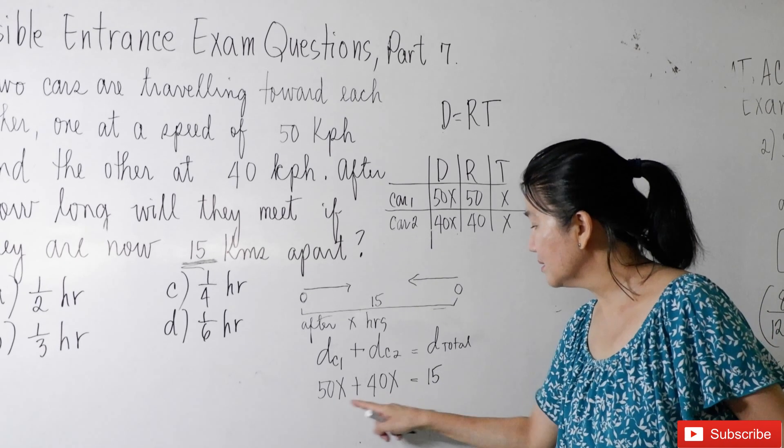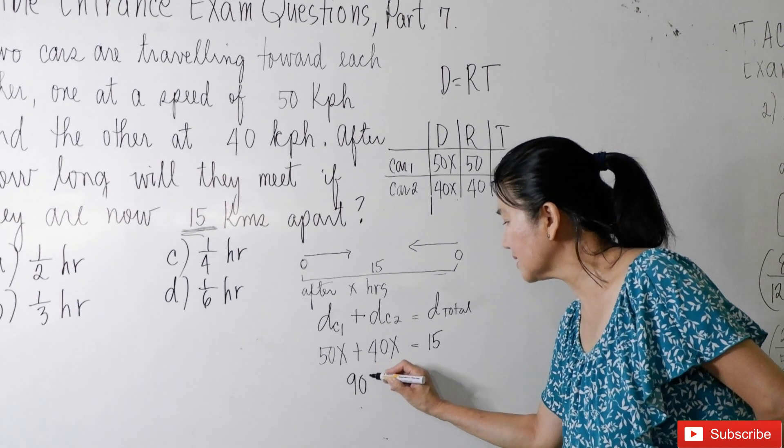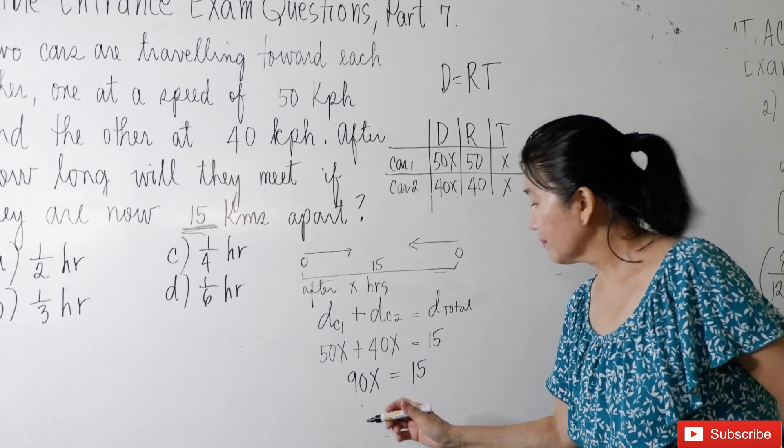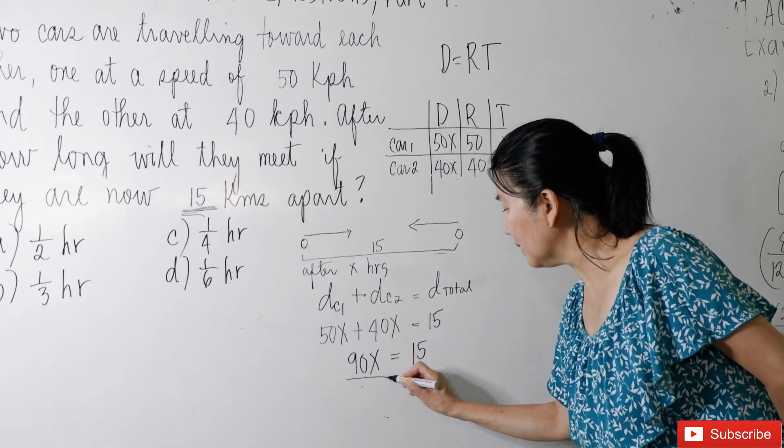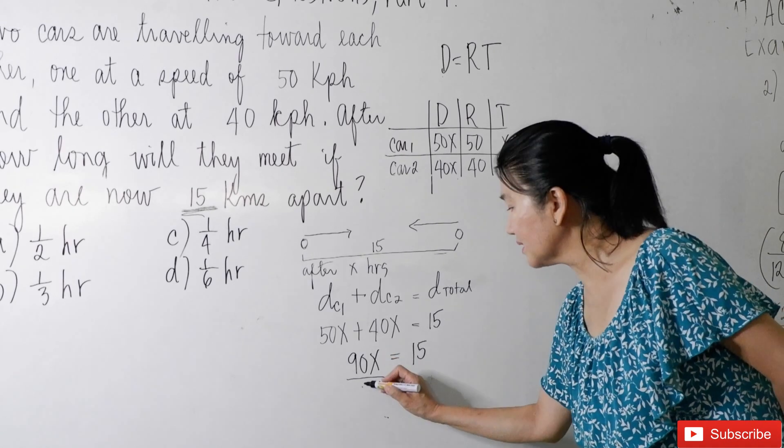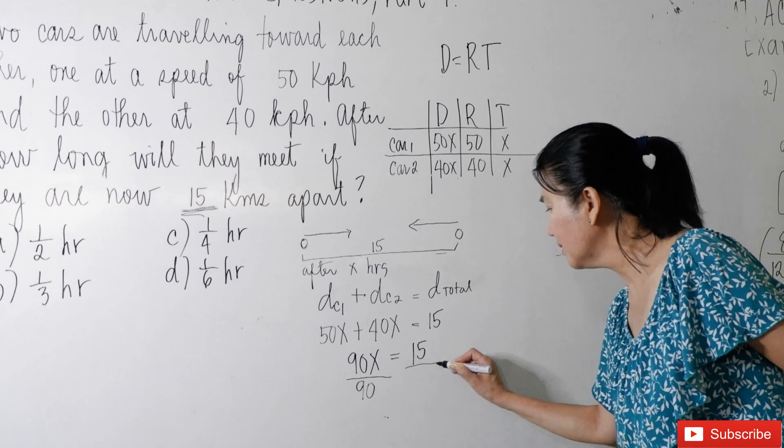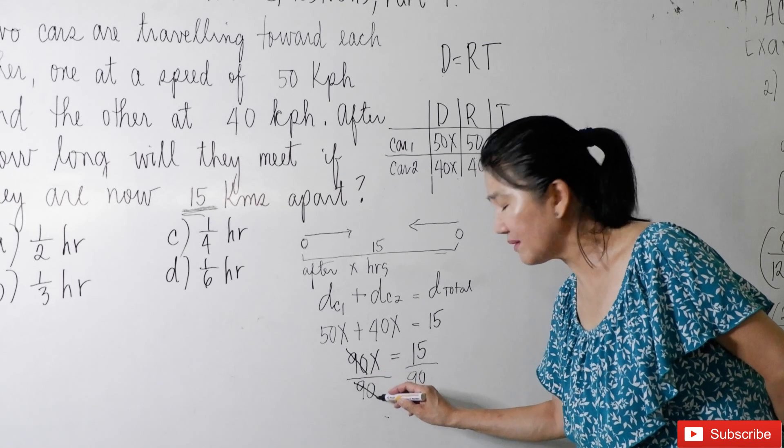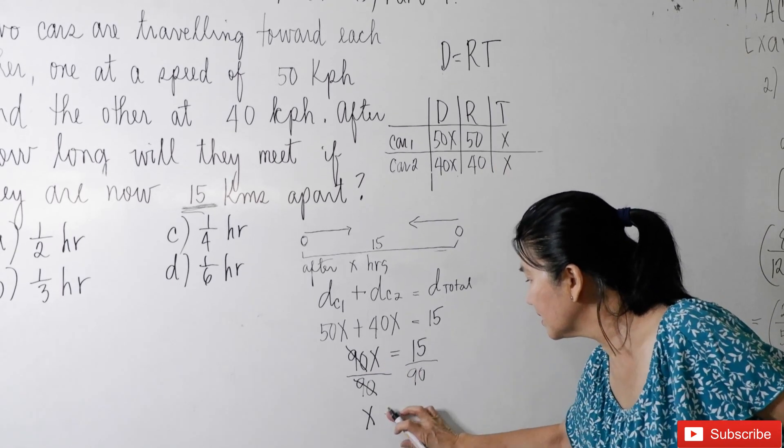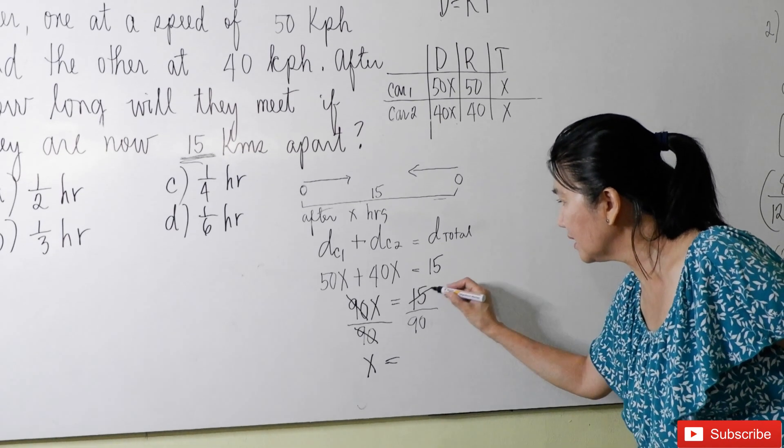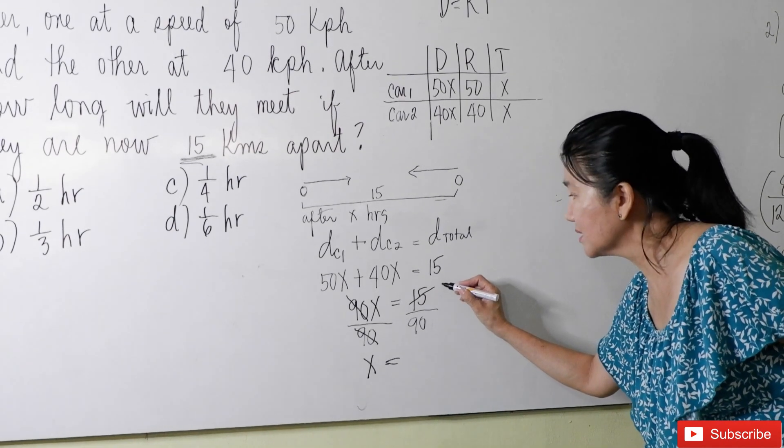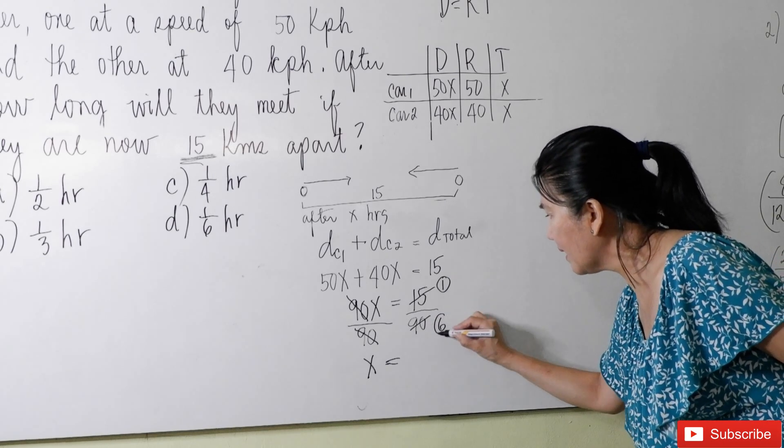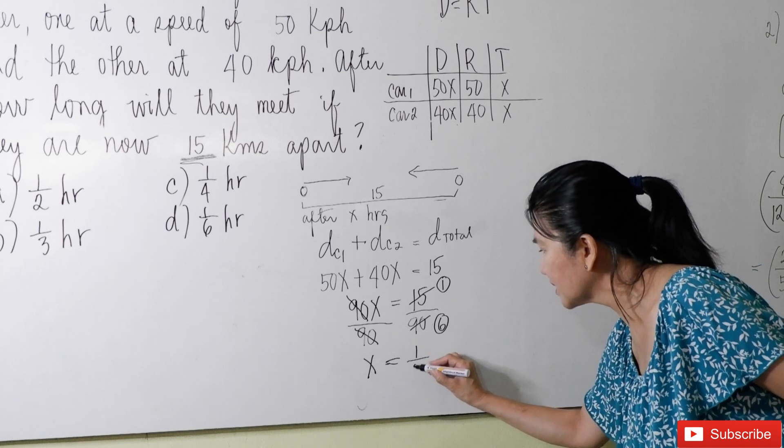So now, you add this. So you have 90x is equal to 15. Then, the usual simplification or isolating x, divide both sides by 90 so that you can isolate x. So x here is equal to 15 divided by 15 is 1, 90 divided by 15 is 6. So now, we have 1 over 6 of an hour.